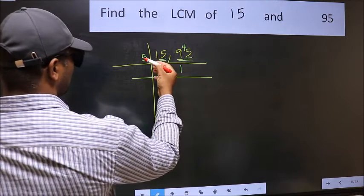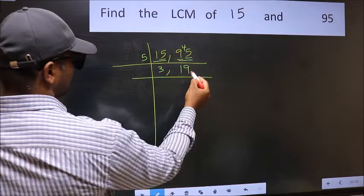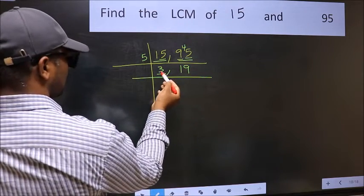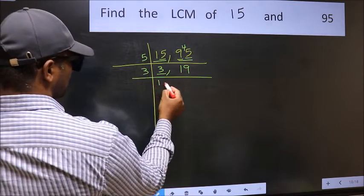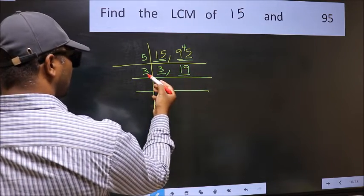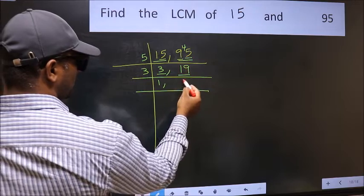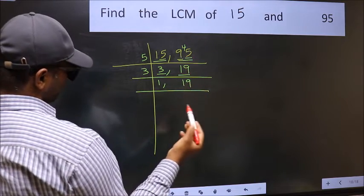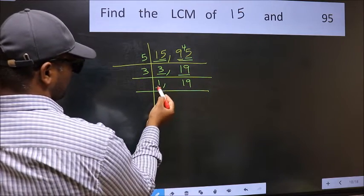When do we get 45 in the 5 table? 5 nines 45. Now we have 3. 3 is a prime number, so 3 once 3. The other number is 19. Not divisible by 3, so write it down as is. Now we got 1 here.